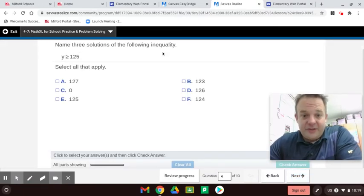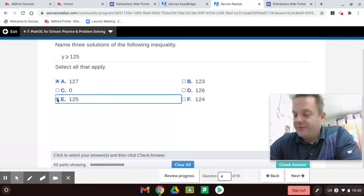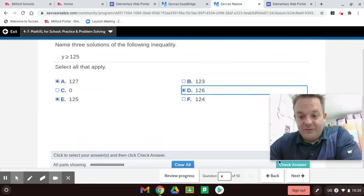Name three solutions of the following inequality. Y is greater than or equal to 125. Well, is 127 greater than or equal to 125? Is 0? No. This is the tricky one. 125 is greater than or equal to 125. Yeah, that's true. 123. 126 is greater than or equal to. So, there we go.